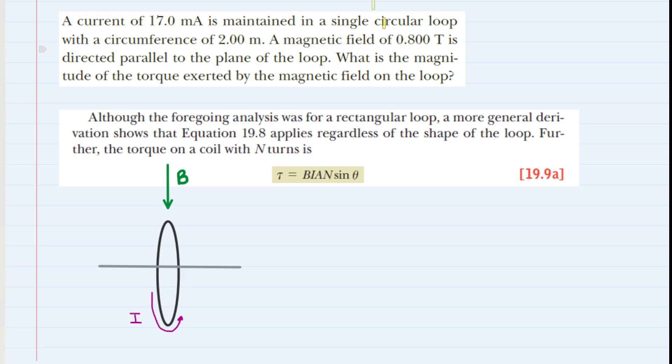A magnetic field of 0.8 tesla is directed parallel to the plane of the loop. We need to find the magnitude of the torque exerted by the magnetic field on the loop. In chapter 19, we learned that when you have a magnetic field applied to a current-carrying loop, a torque could develop on the loop, causing it to spin around.